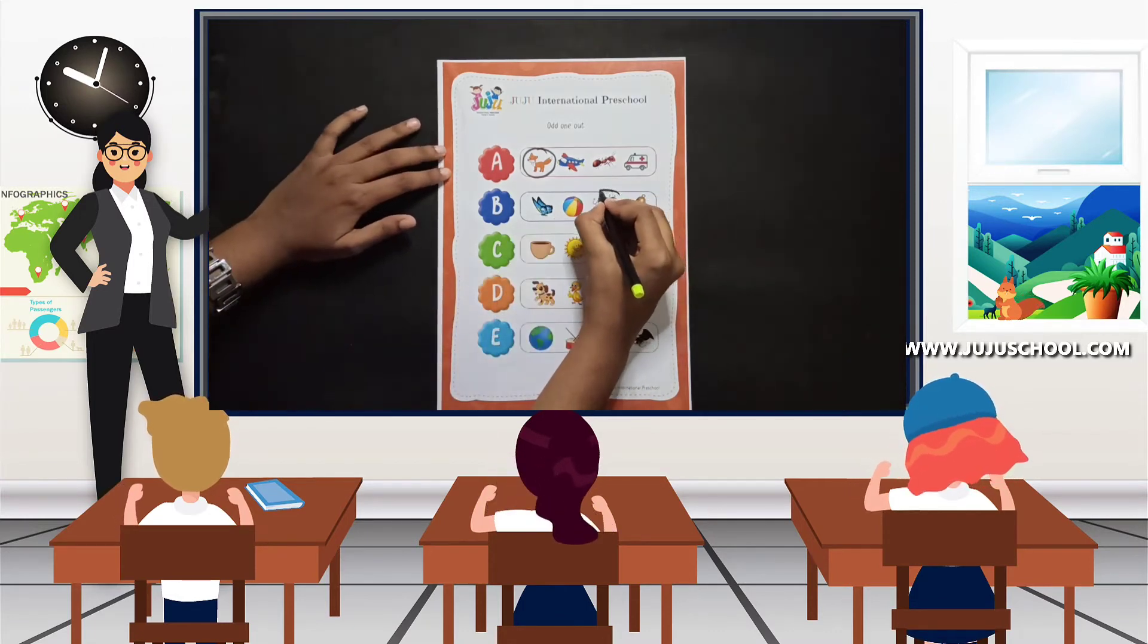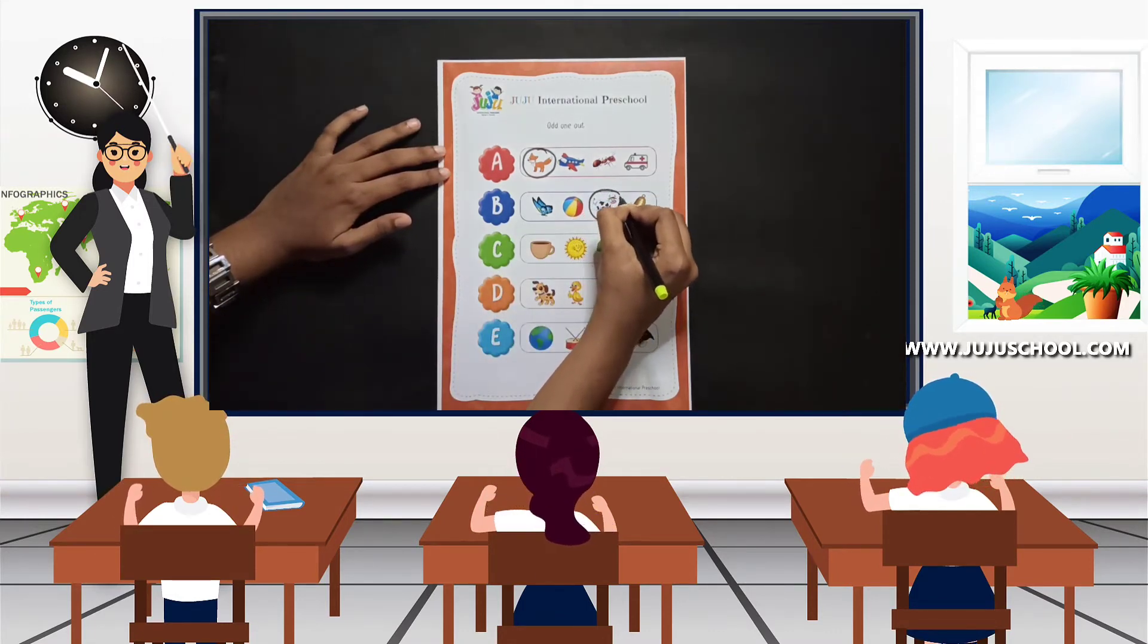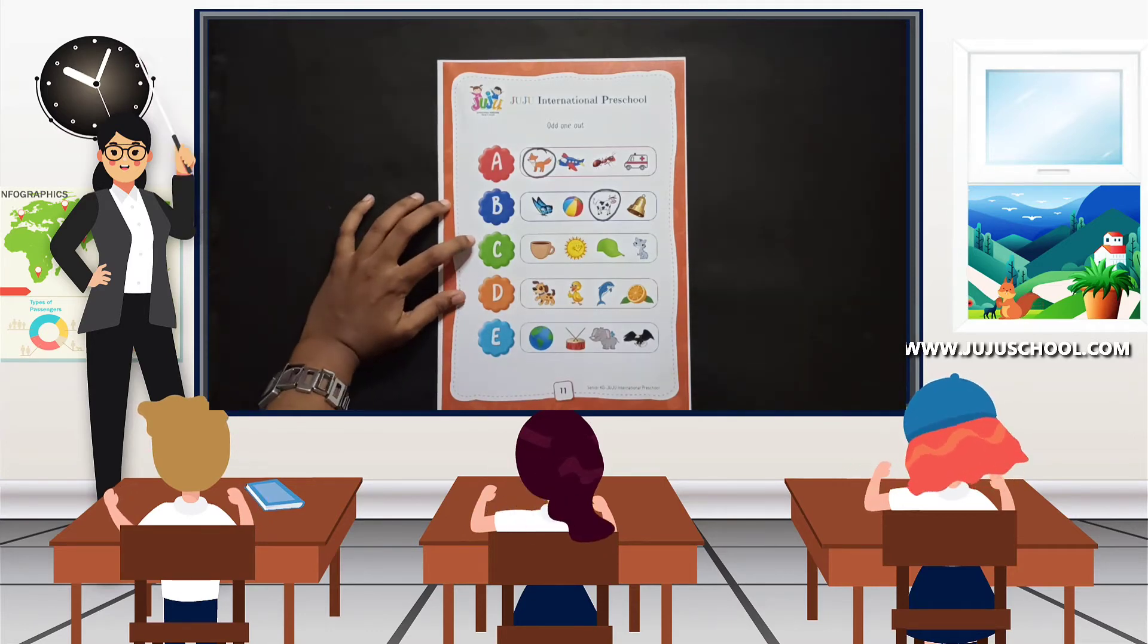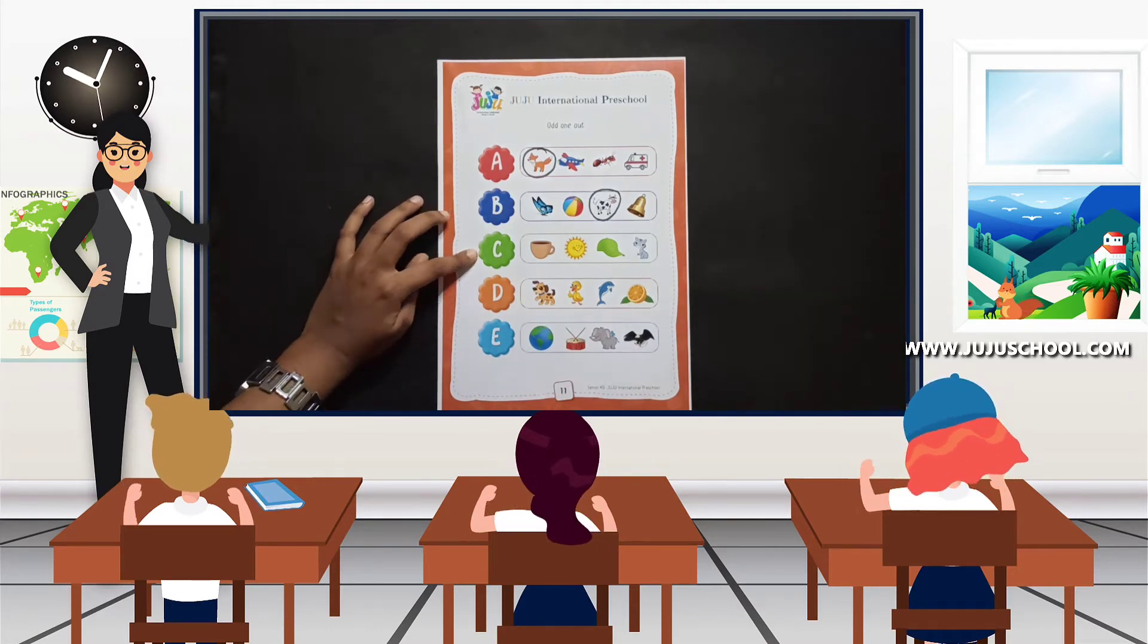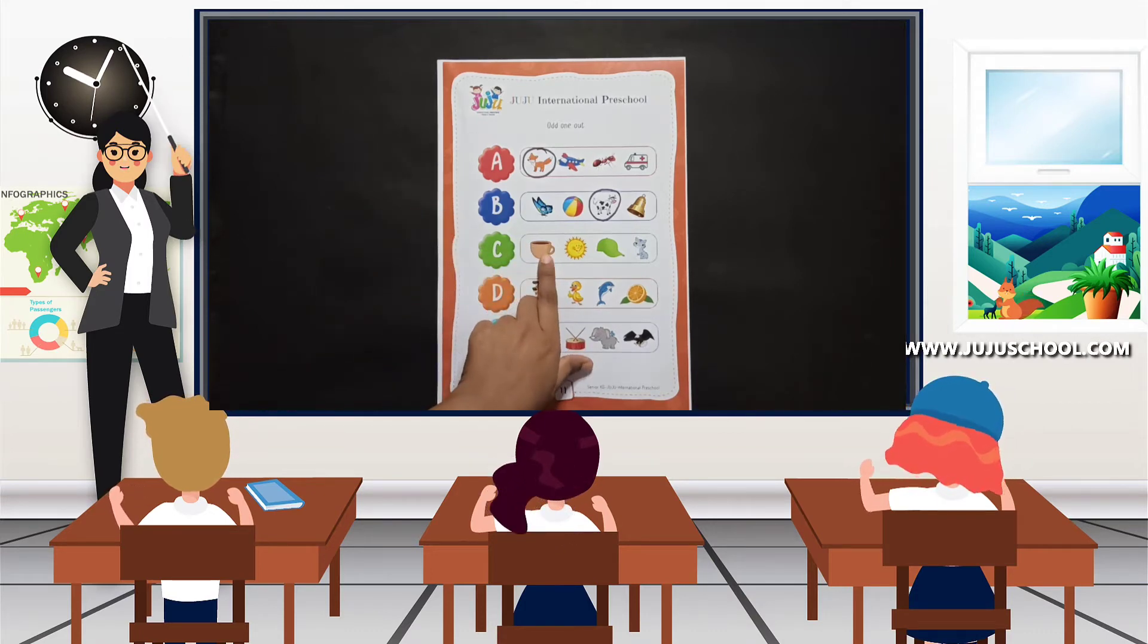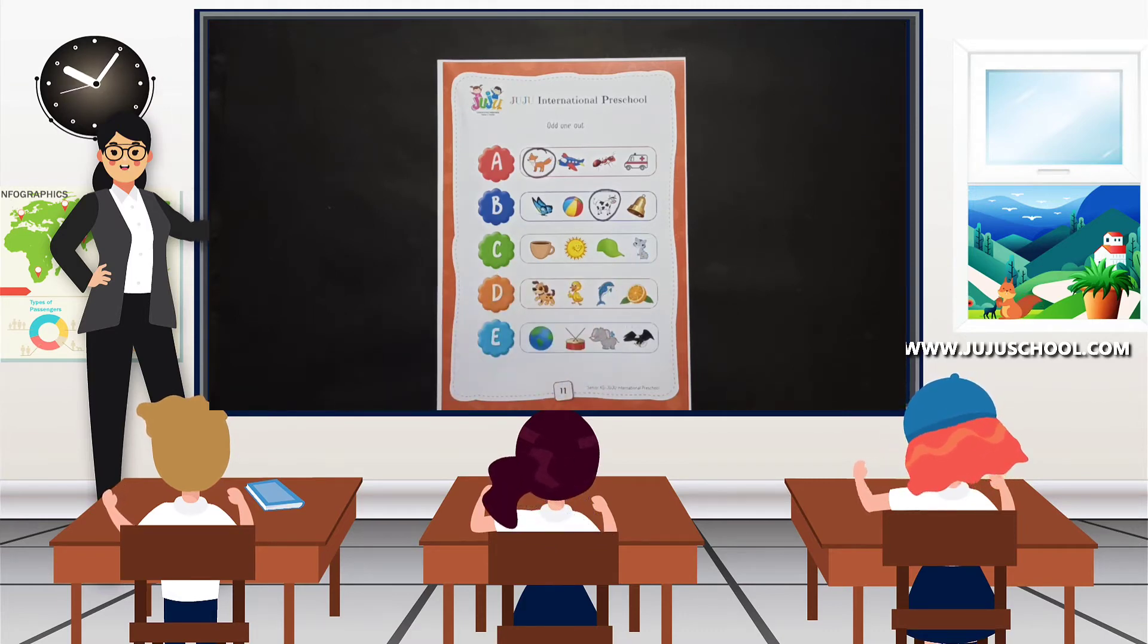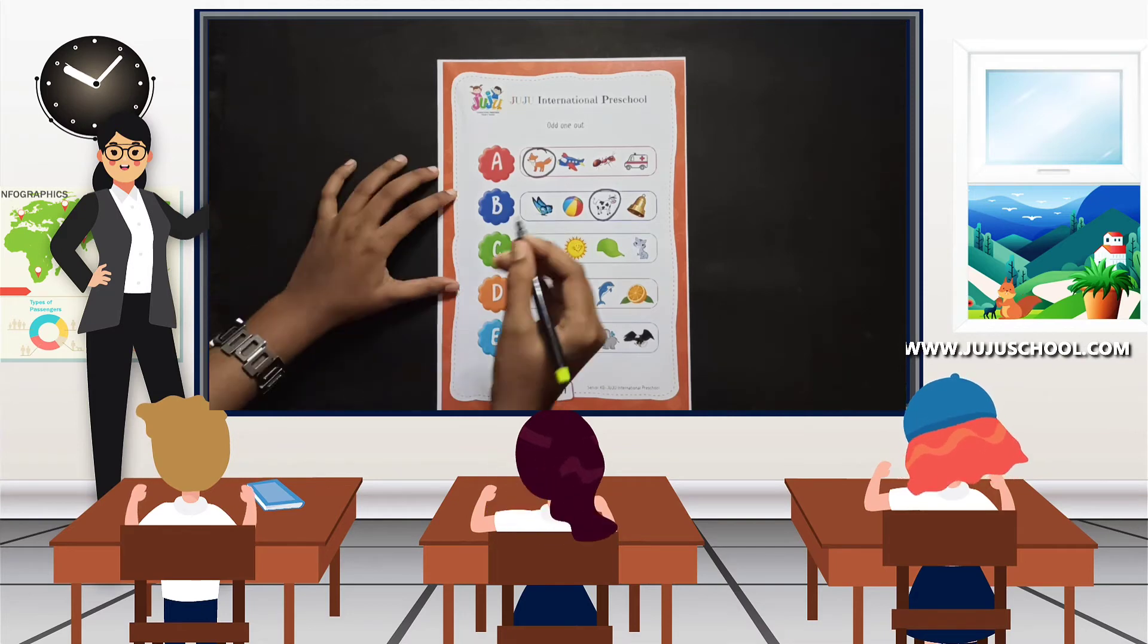And next we move to alphabet letter C. C for cup, C for is it sun? No. C for car, C for car. So which is the odd one out over here? Can you kids just guess? Yes, it's the sun. So we are going to circle the sun and the odd one out is out.